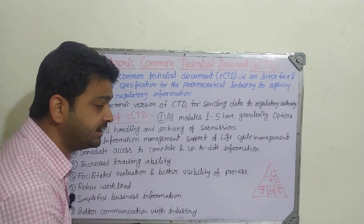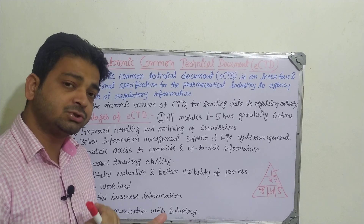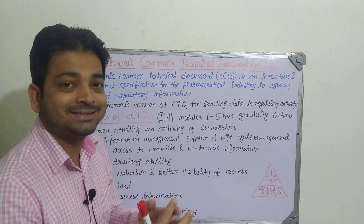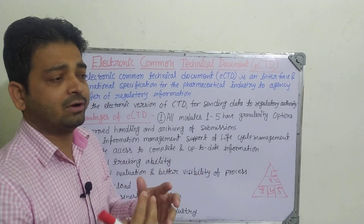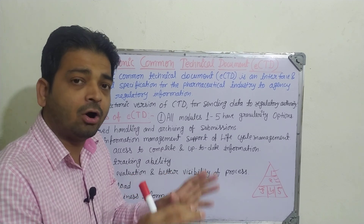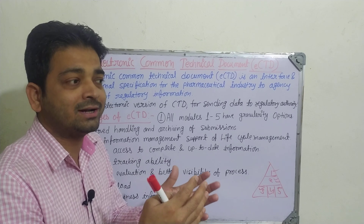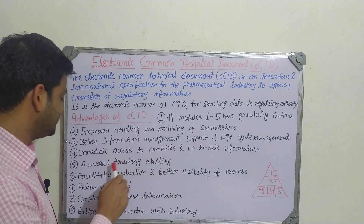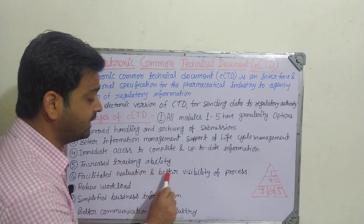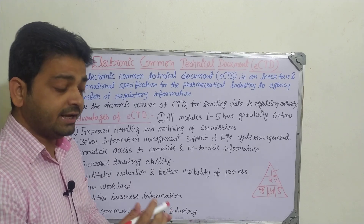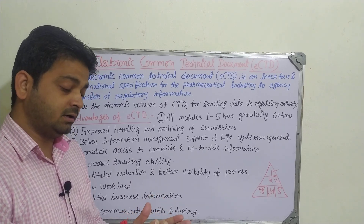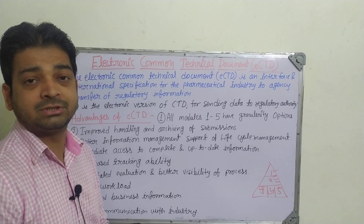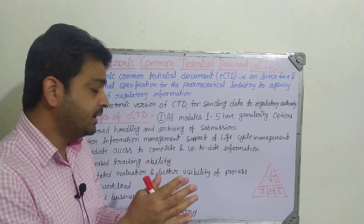Fourth, immediate access to complete and up-to-date information — there is no need to go through dispatch, post, or any offline method. It will be completely online, and today you are filing and immediately it can reach the particular reviewers and governing body. Fifth, increased tracking ability — the pharmaceutical manufacturer or sponsor will know where their process stands, just like tracking an application to a funding agency online, where you can see every day what the proceedings and progress of your file are.